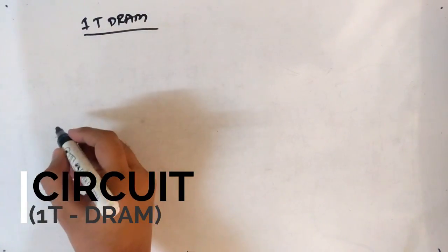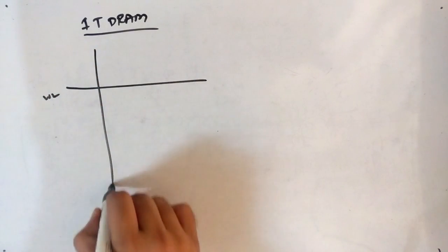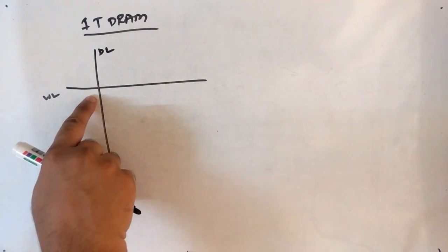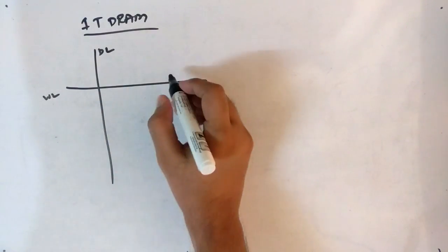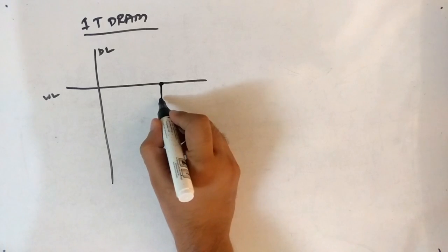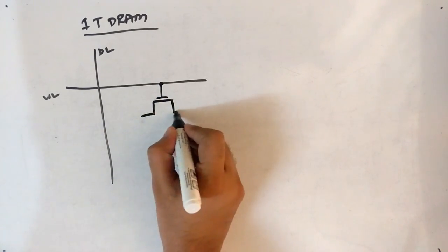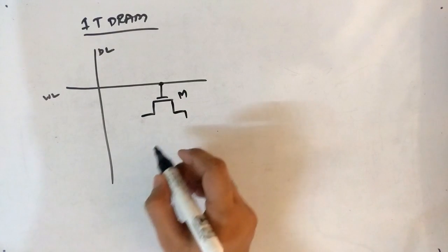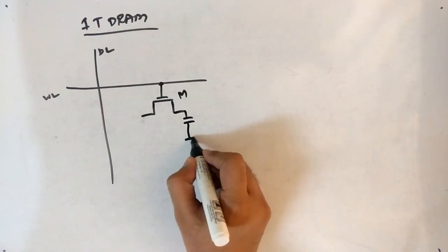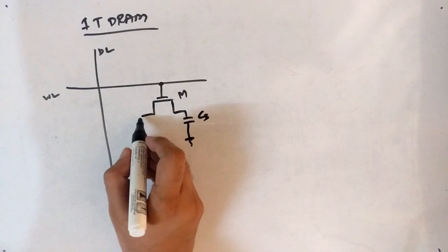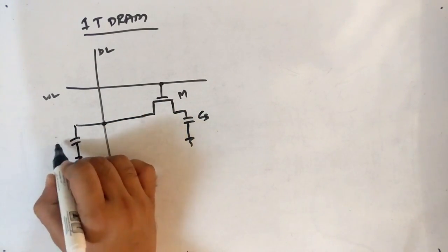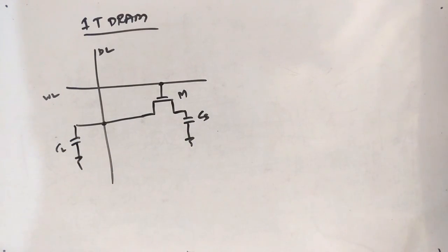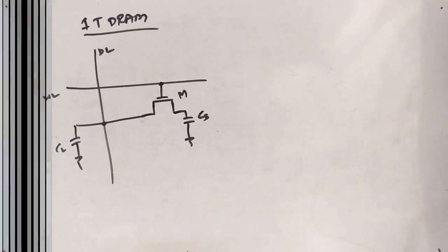To draw the circuit, we first need the word line, then we need the data line. A dot means a connection is present; no dot means no connection. We have the access transistor M, one storage capacitor CS which will store the charges, and one more capacitor CL. This is the circuit of the one-transistor DRAM — you can see only one transistor.